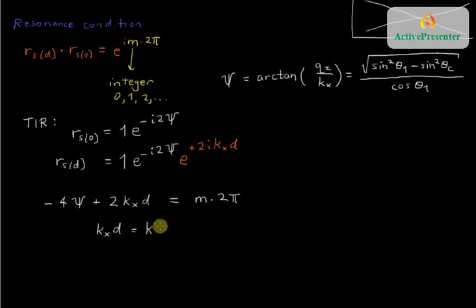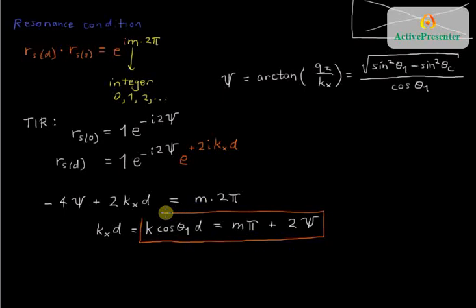Let's divide everything by 2, and I will get KxD, which by the way equals K cosine of θ incident, θ₁, times D, equals, well, I've divided everything by 2, so I've got Mπ, and then I've divided this by 2 and brought it to the other side, so that's plus 2ψ. And this becomes our equation that governs what the relationship is between the angle that the light is traveling at, the wavelength of the light in the waveguide, and the thickness of the waveguide.